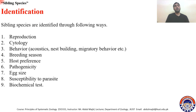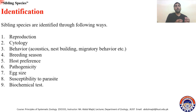Sibling species can be identified by the following ways: first, by reproduction — you find out whether they reproduce with each other or not; second, by cell study, such as cytology; third, by behavior such as acoustics. For example, if there are two similar-looking frogs or crickets, you record their voices and mating calls, then check them through sound graphs and look for differences in their sounds.